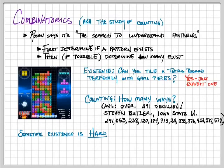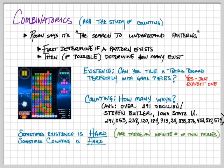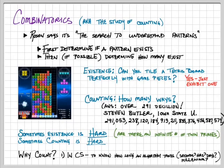So, in this case, we have an example of an existence question being easy, and the counting question being hard, but being solvable. Sometimes the existence question is hard, and things like, are there an infinitude of twin primes, which is one of those big millennial problems. Sometimes the counting question is hard. So, why do we count in the first place? For you, as a computer scientist, really, you want to understand how long an algorithm is going to take.